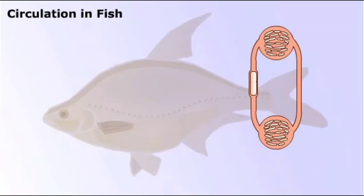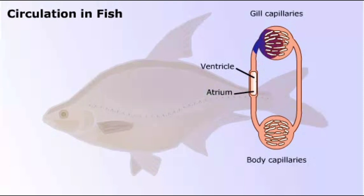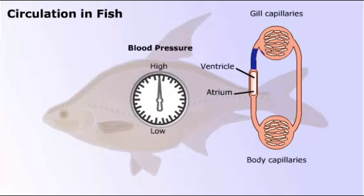The simplest vertebrate heart is seen in fish, as this diagram shows. The atrium is a relatively thin-walled chamber in which blood collects before passing to the muscular ventricle. The heart pumps blood out to the gills, where oxygen diffuses into the blood. Blood then passes from the gills to the body tissues. From there, it is collected and returned to the heart. The problem with this system is that the blood pressure drops as it passes through the gill capillaries, and it drops yet again as it passes through capillaries in the body tissues.